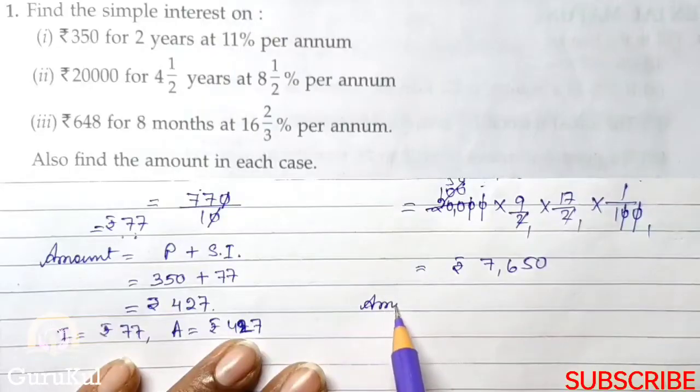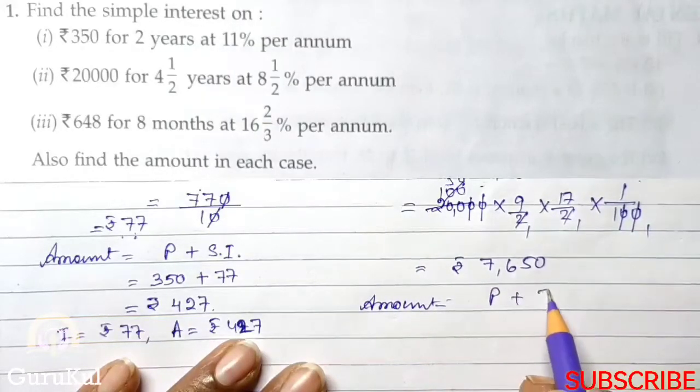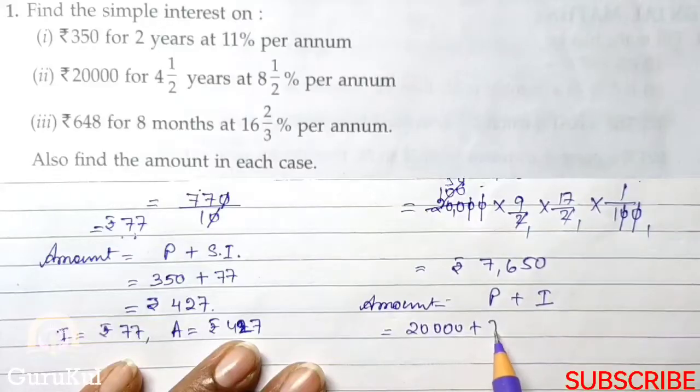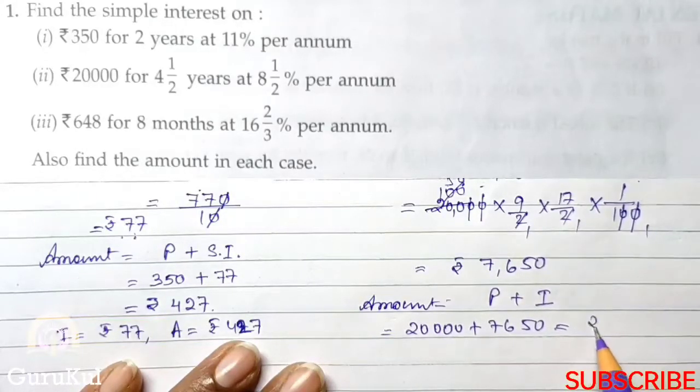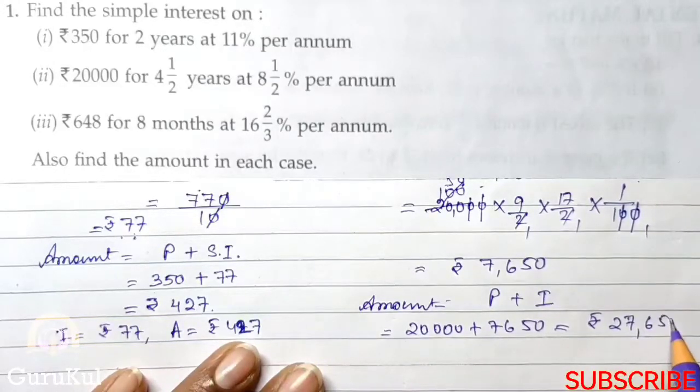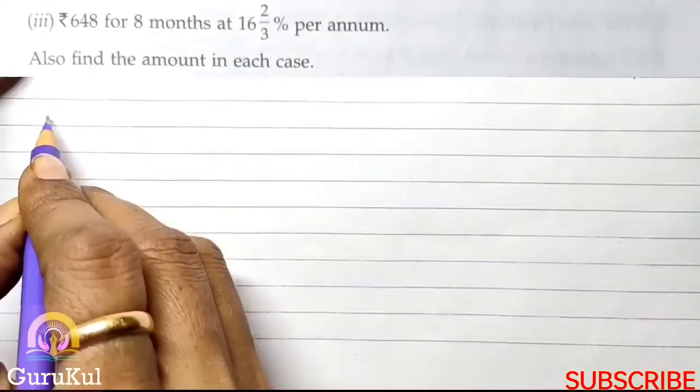Now to find out amount, we add principal plus interest, that is 20,000 plus 7650 gives us Rs. 27,650.